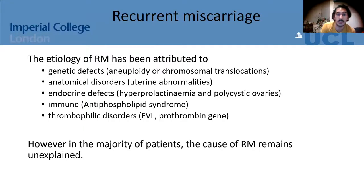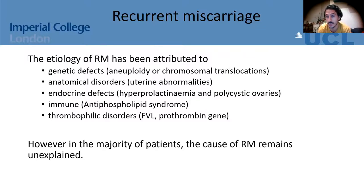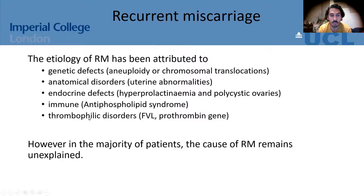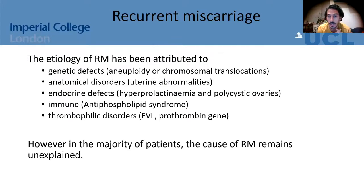Many factors have been attributed to recurrent miscarriage, including genetic factors such as aneuploidy or chromosomal translocations, anatomical disorders, endocrine defects, antiphospholipid syndrome — an autoimmune disease caused by circulating maternal antibodies — and thrombophilic disorders, where blood clotting in placental vessels can lead to fetal loss. Genes like the prothrombin gene or Factor V Leiden carry mutations that increase the risk of thrombosis. However, in the majority of patients the cause remains unexplained, which is very devastating for patients.